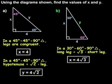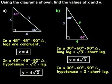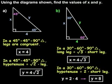To find the value of y, remember that in a 30-60-90 degree triangle, the length of the hypotenuse is 2 times the length of the short leg, so y must equal 2 times 4, which is 8.